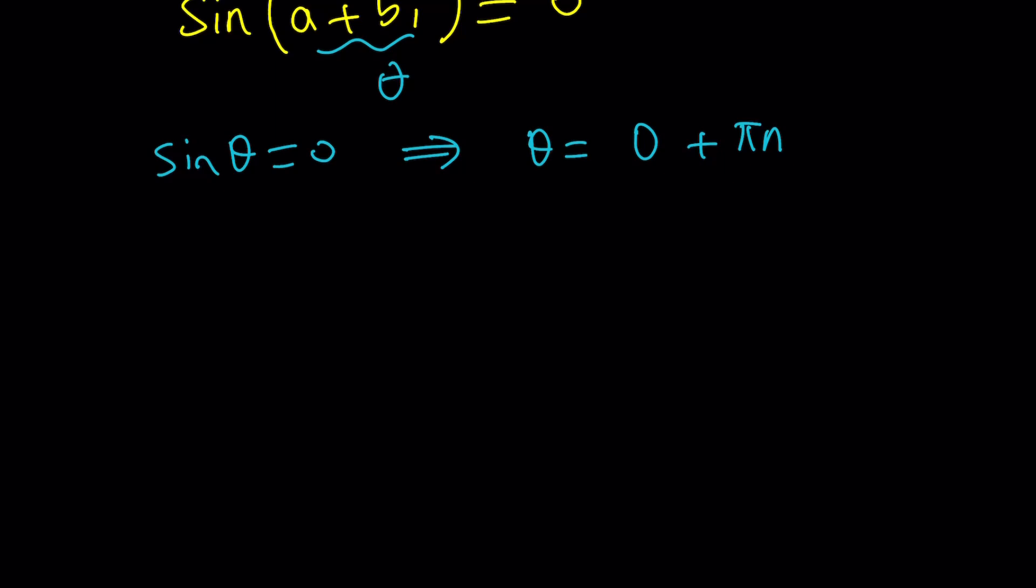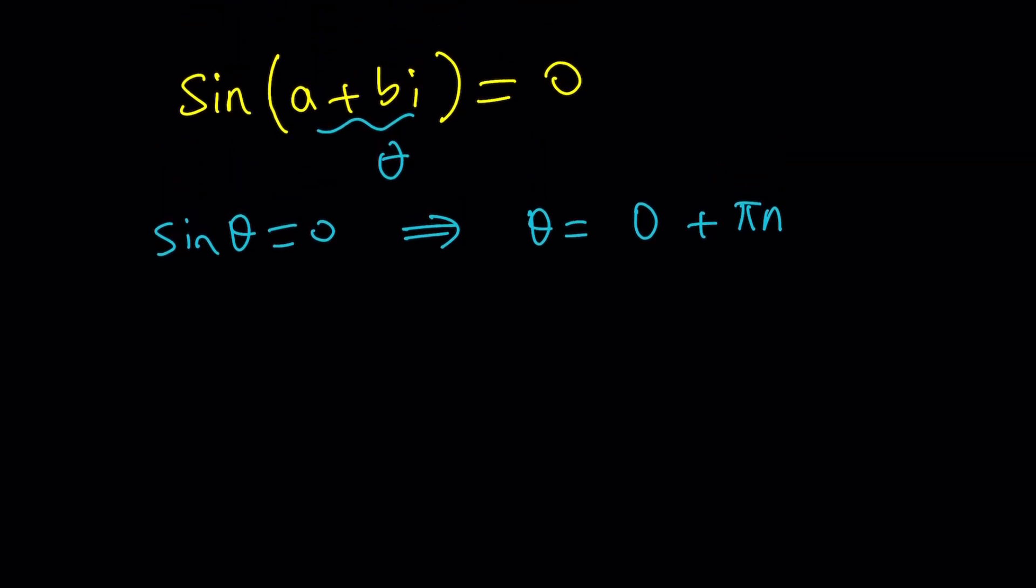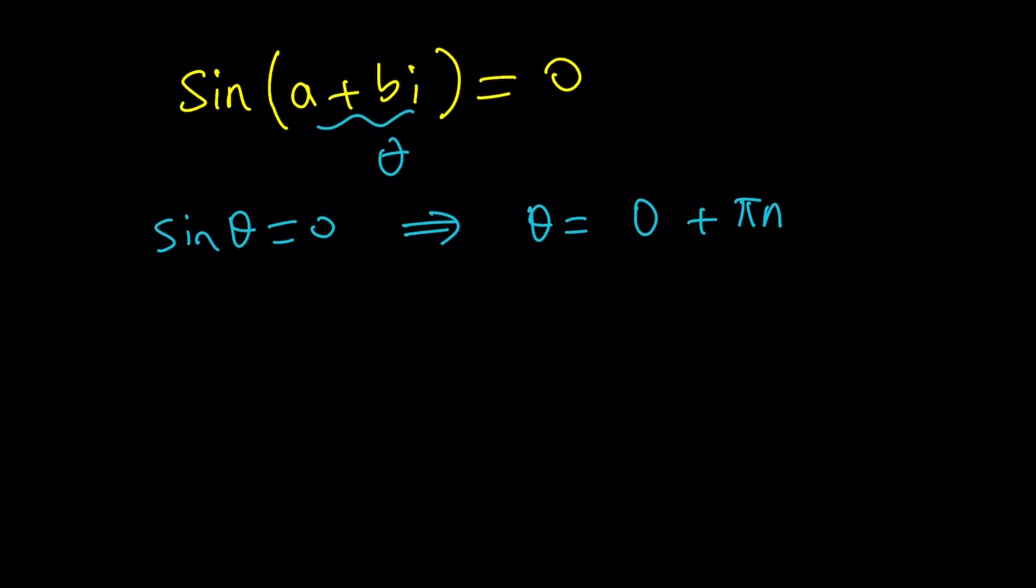If theta is real then we're good, but a plus bi can be complex. I mean it is complex even if it's real, right? So can we just safely say that this is going to be true when a plus bi is zero? Let's find out.